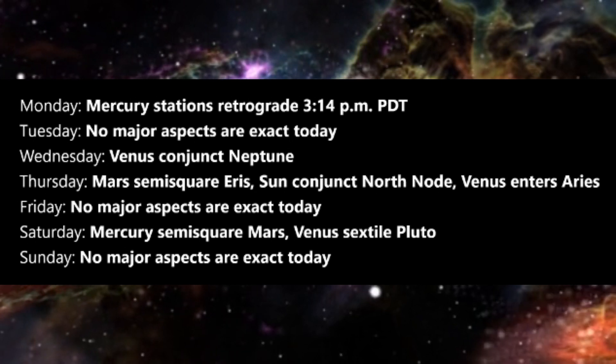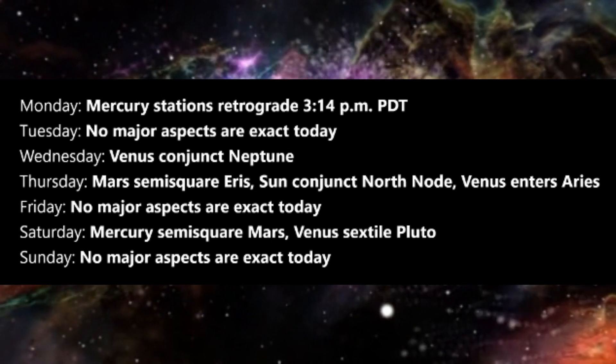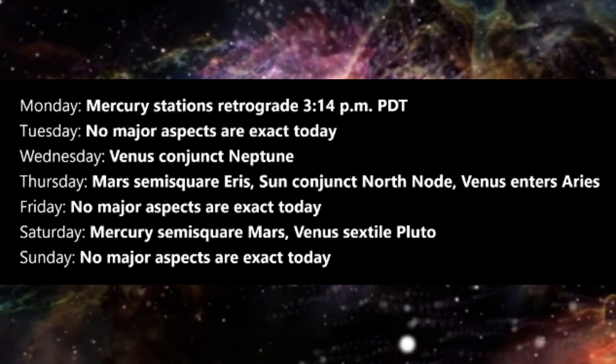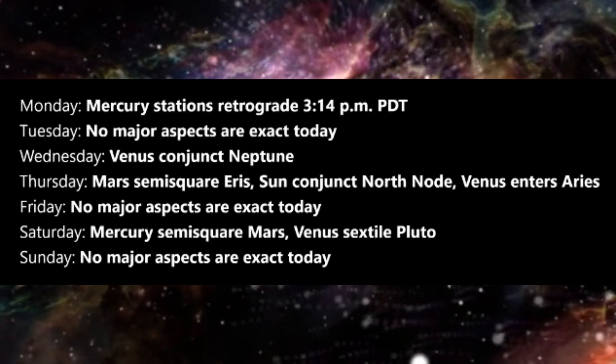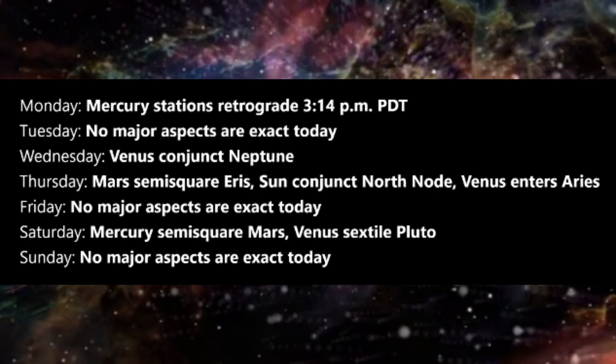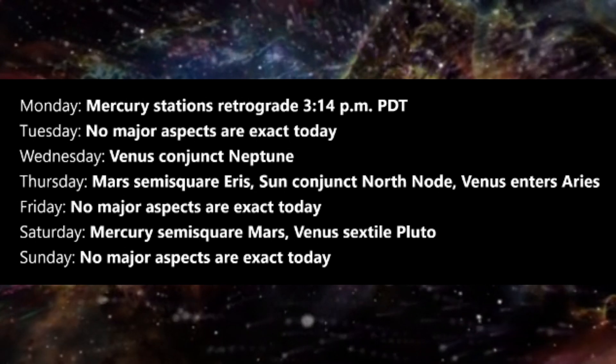There are no major aspects exact on Friday. On Saturday, Mercury is semi-square Mars. We may feel more argumentative than we would like, and eager to express our opinions. However, especially with Mercury now retrograde, it will be very important to weigh our words carefully before sending them out into the world.